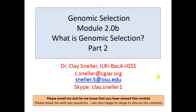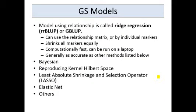Welcome to the second half of Module 2 on Genomic Selection, where we're talking about what is Genomic Selection and how it works. There are quite a few different models for Genomic Selection. The example I've been using is a model that's based on relationships, and it's called Ridge Regression RRBLUP, sometimes also called GBLUP.